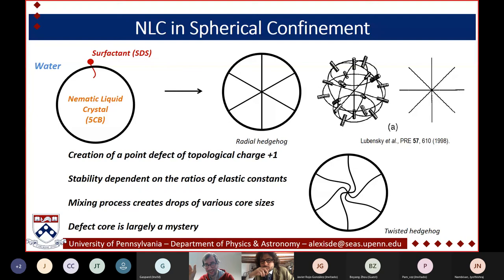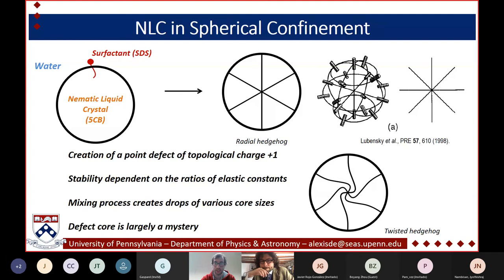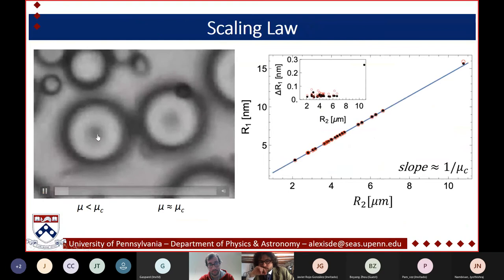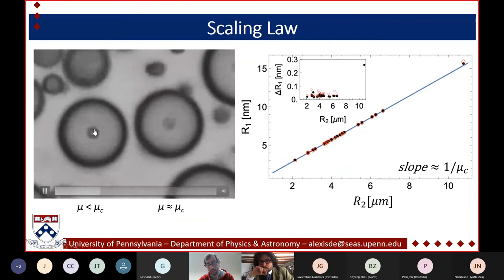The core size varies randomly between drops because the emulsification is a simple hand-mixing process, not controlled like microfluidics. This also means some drops can incorporate a small water droplet at the center, which is visible in bright-field microscopy. This water bubble — which sets the effective core size — is what prevents fluctuations from arising in those drops.